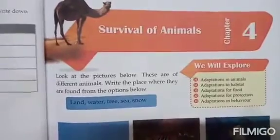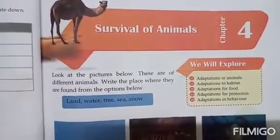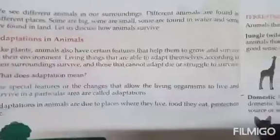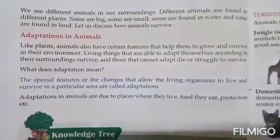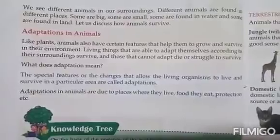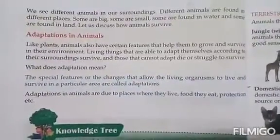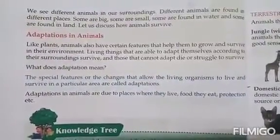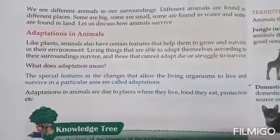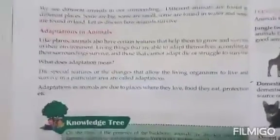Dear students, next we are going to study our new chapter — Chapter 4: Survival of Animals. We see different animals in our surroundings. Different animals are found in different places. Some are big, some are small. Some are found in water and some are found on land.